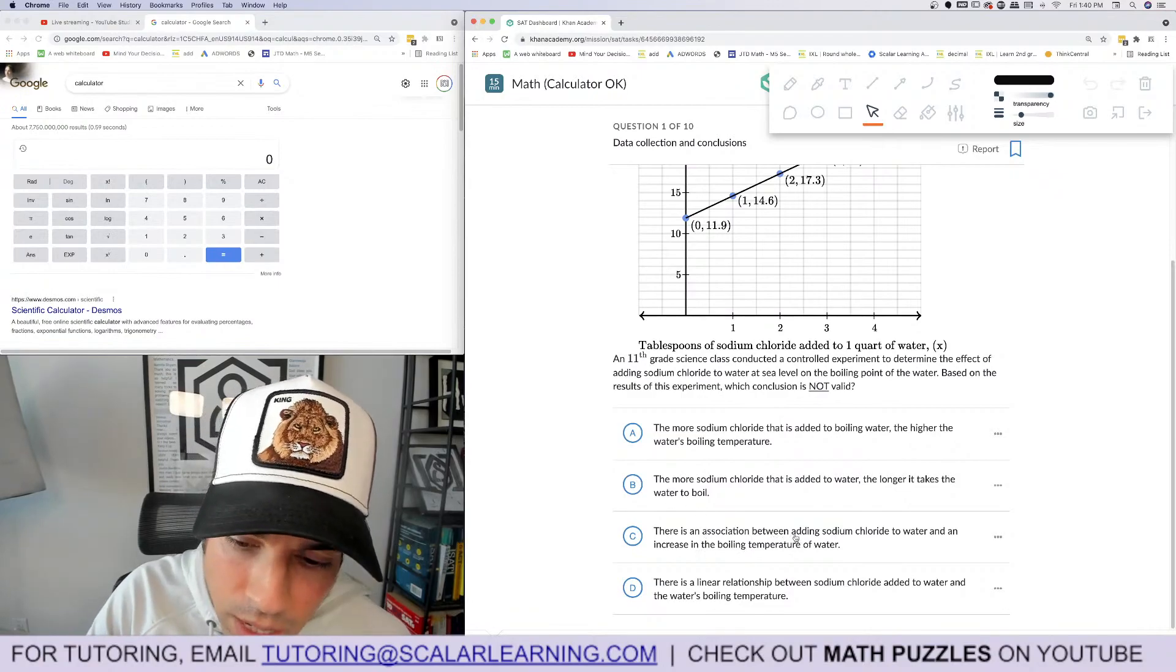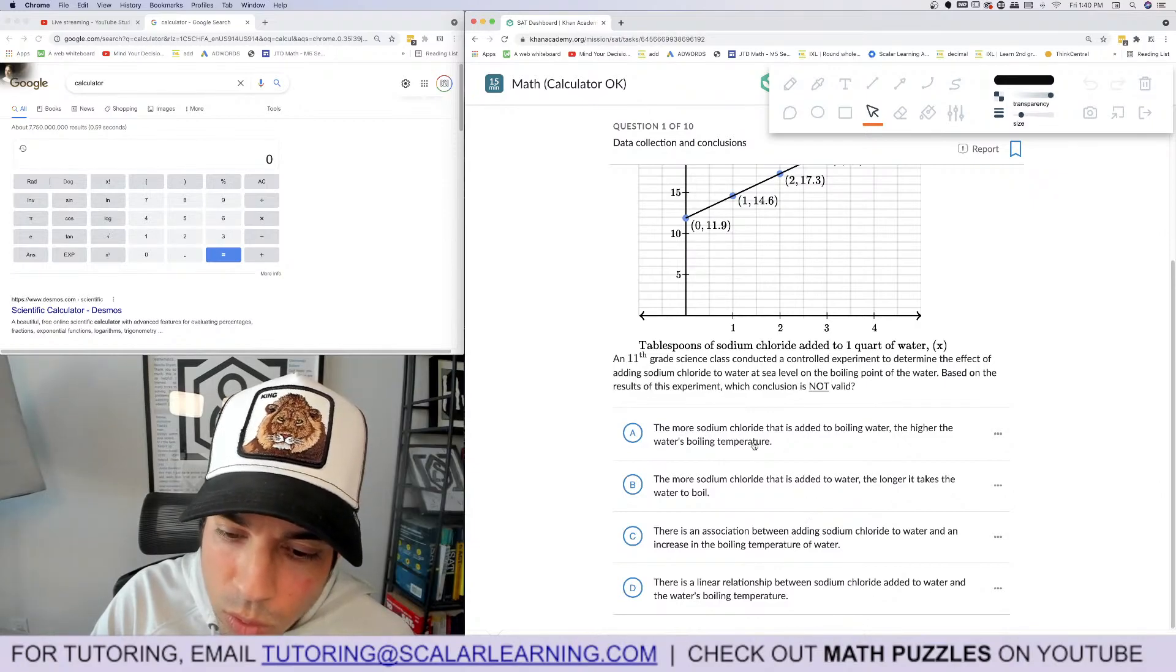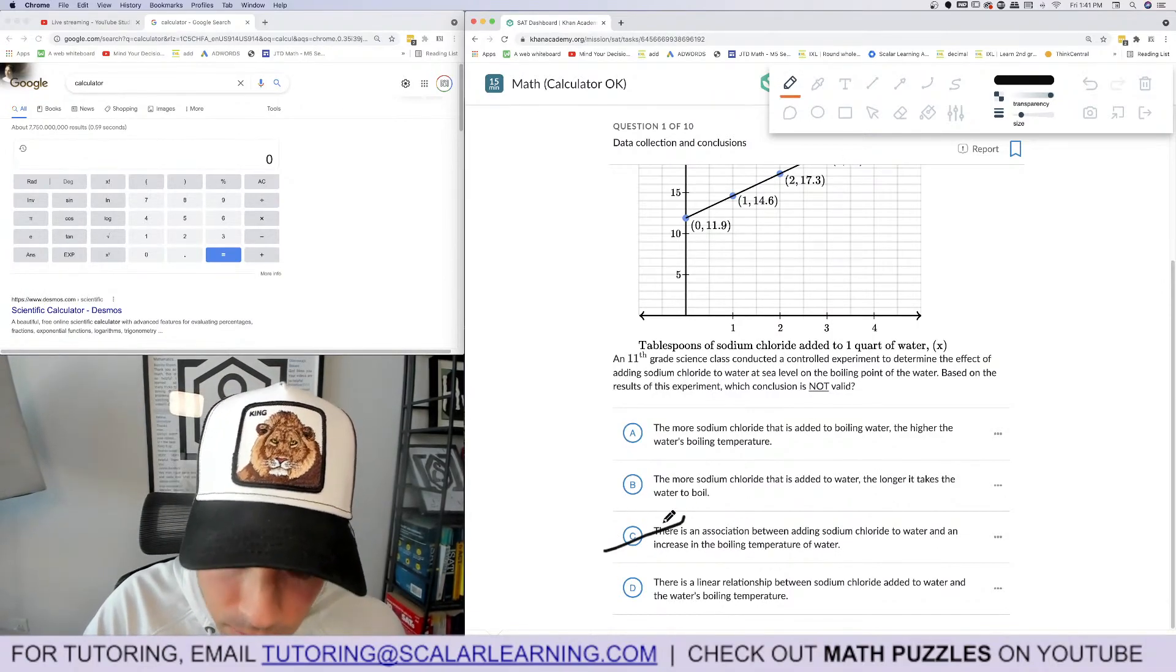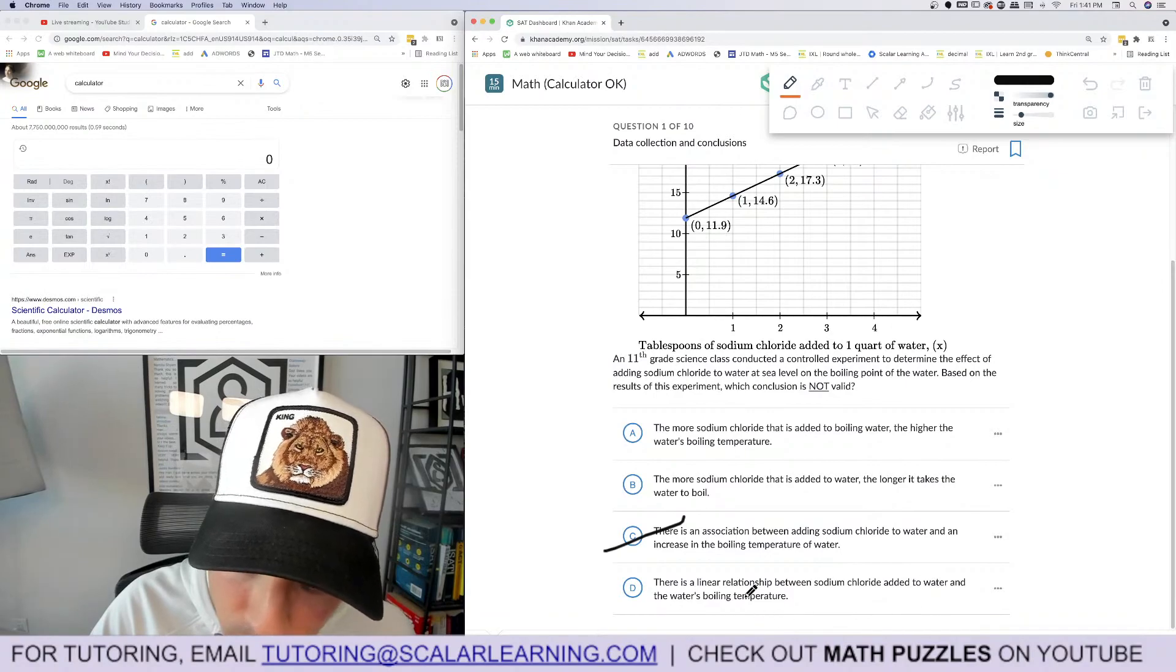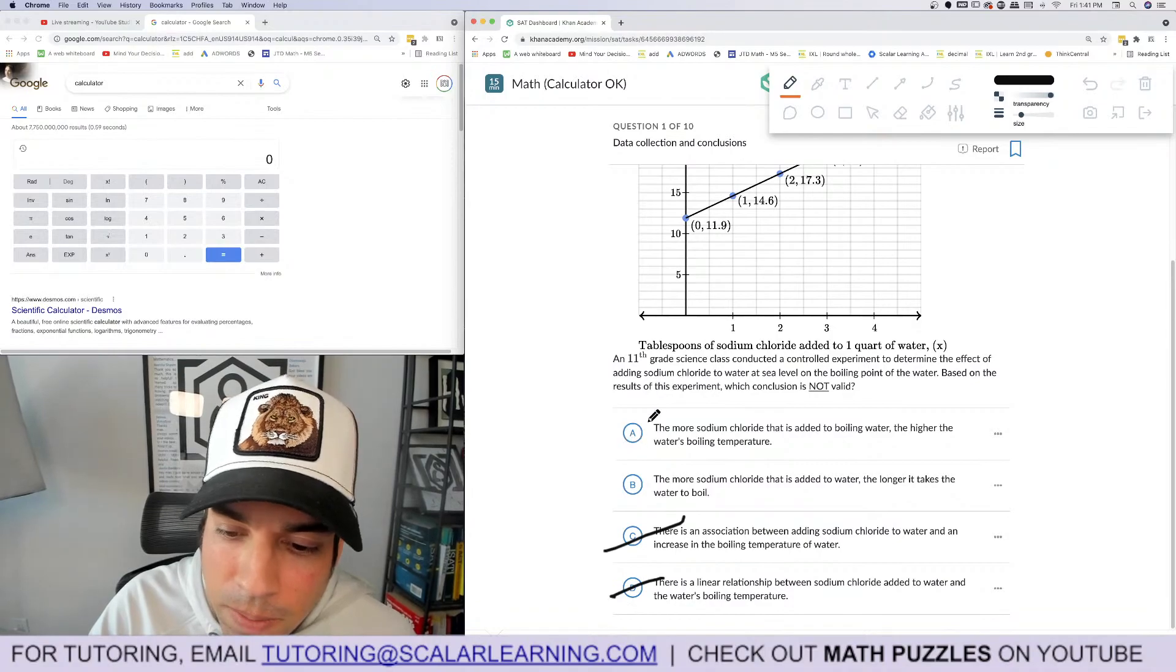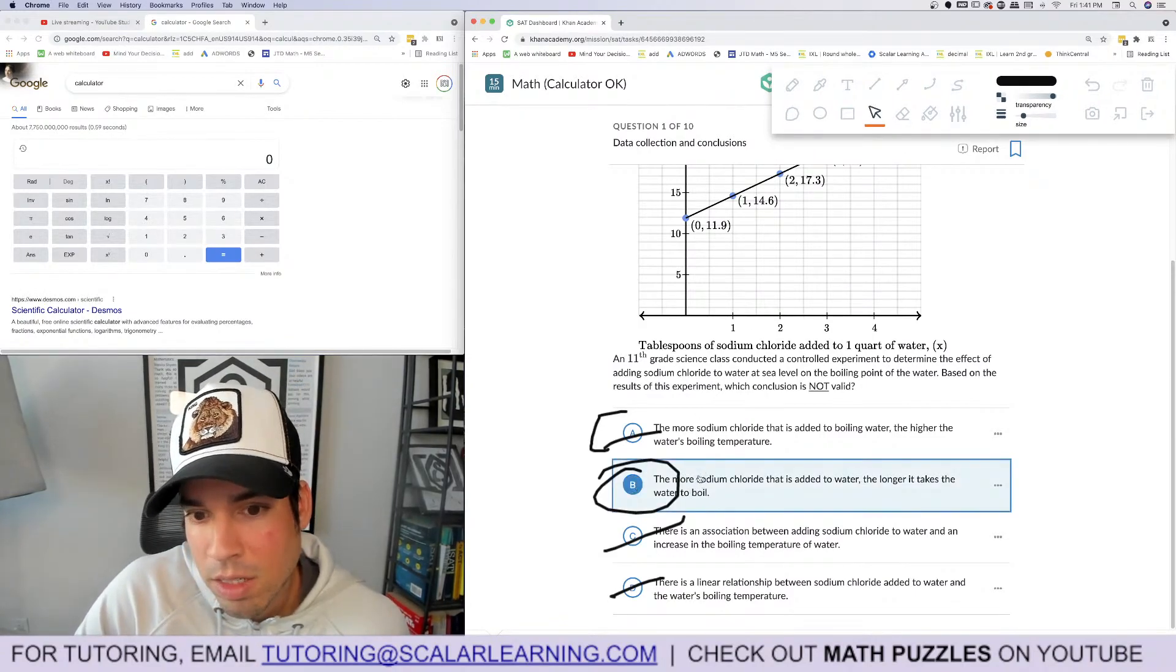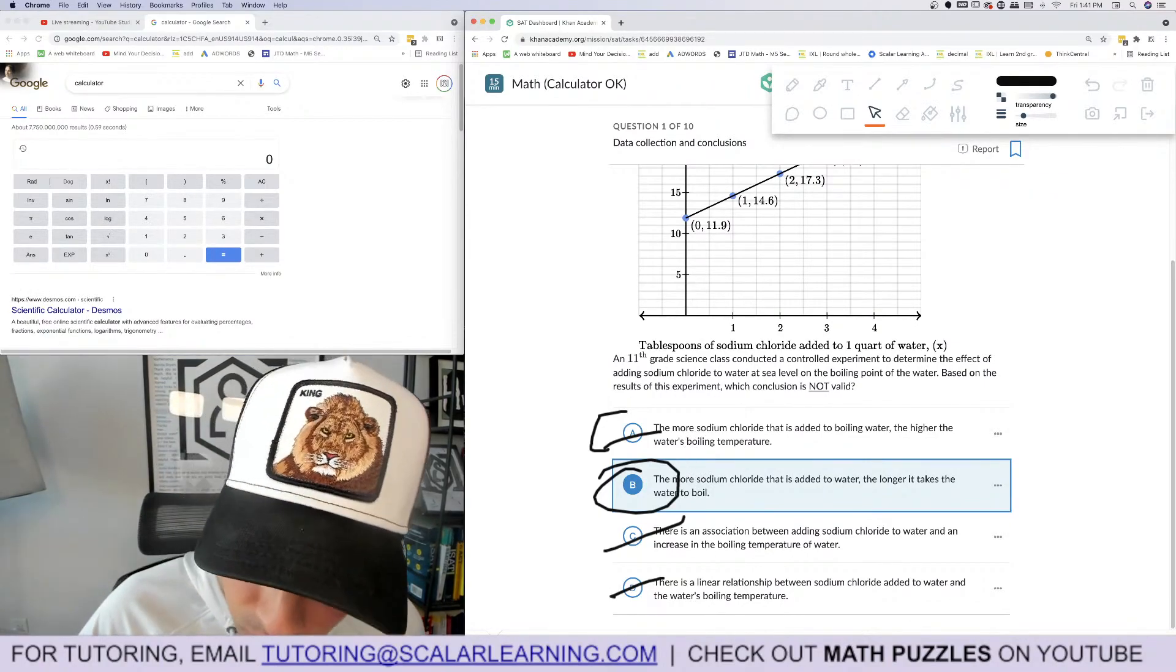There's an association between adding sodium chloride to water and an increase - this is definitely legit because that's nice chill language, it's an association. There's a linear relationship between sodium chloride added to water and the water's boiling temperature - that appears to be a linear relationship. This is the one that's talking about how long it's taking and that may be totally true, but it is true because it's just a matter of how quickly it gets to the boiling temperature needed. Time is irrelevant. Boom, done.